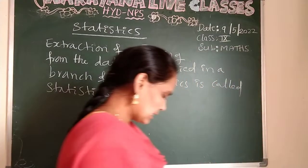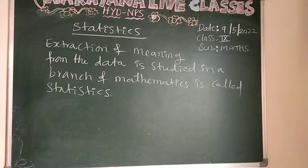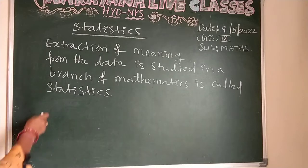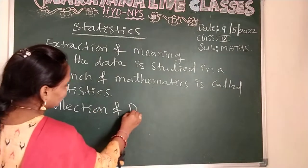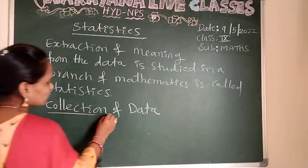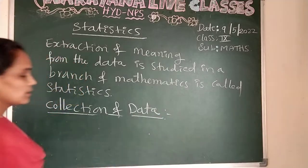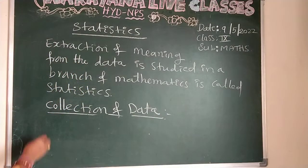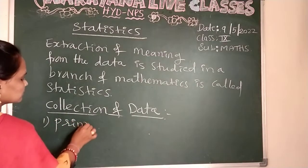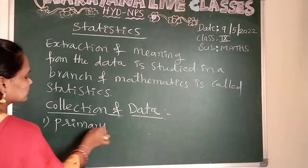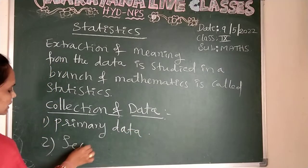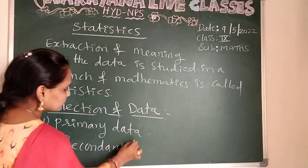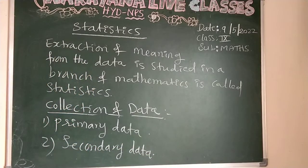Now, collection of data. We have two types of collection of data: primary data and secondary data. Please take a screenshot — I will erase the board.